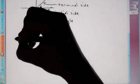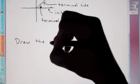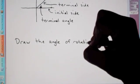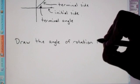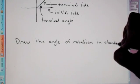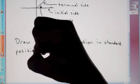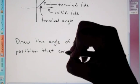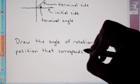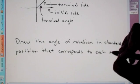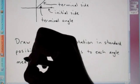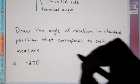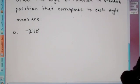I want you to draw the angle. Draw the angle of rotation in standard position that corresponds to each angle measure. The first one that we're going to do is negative 270 degrees. So, our first problem.